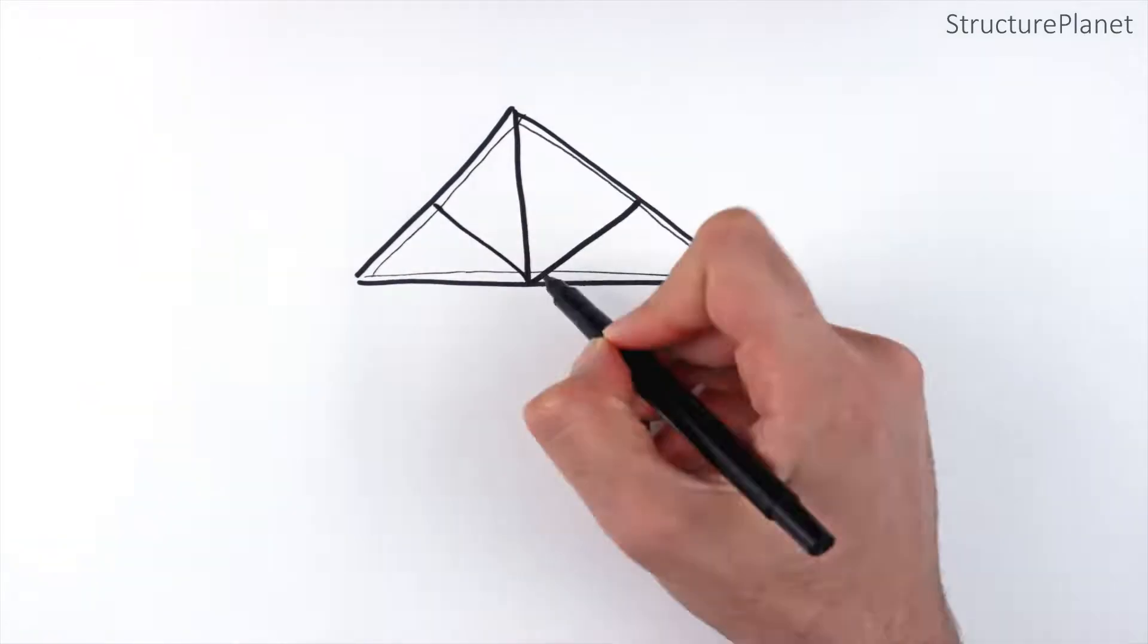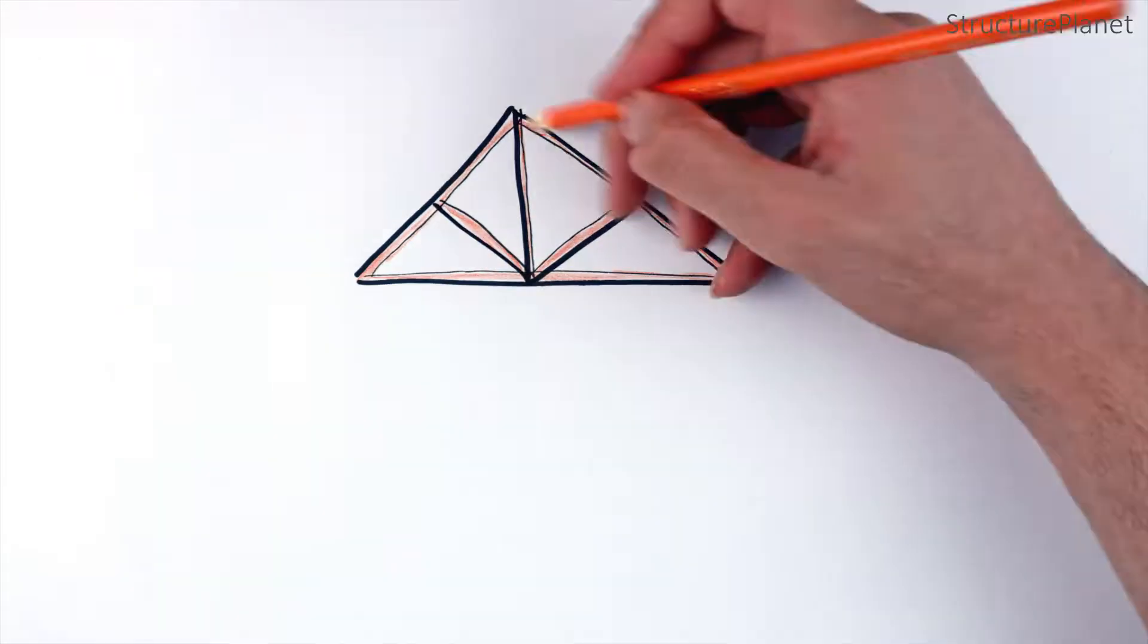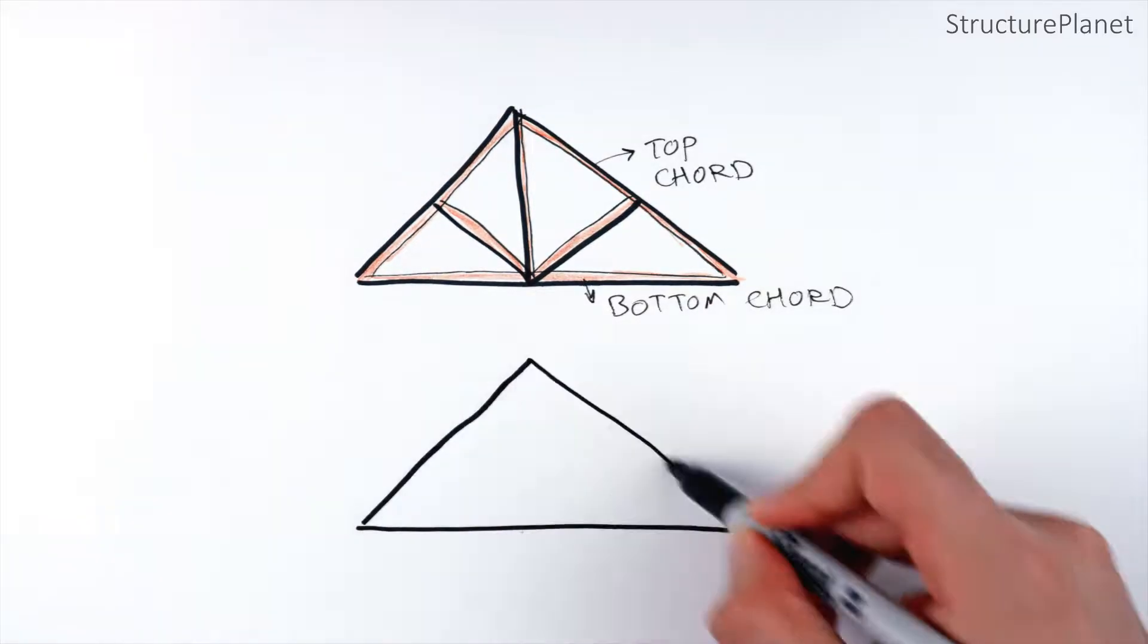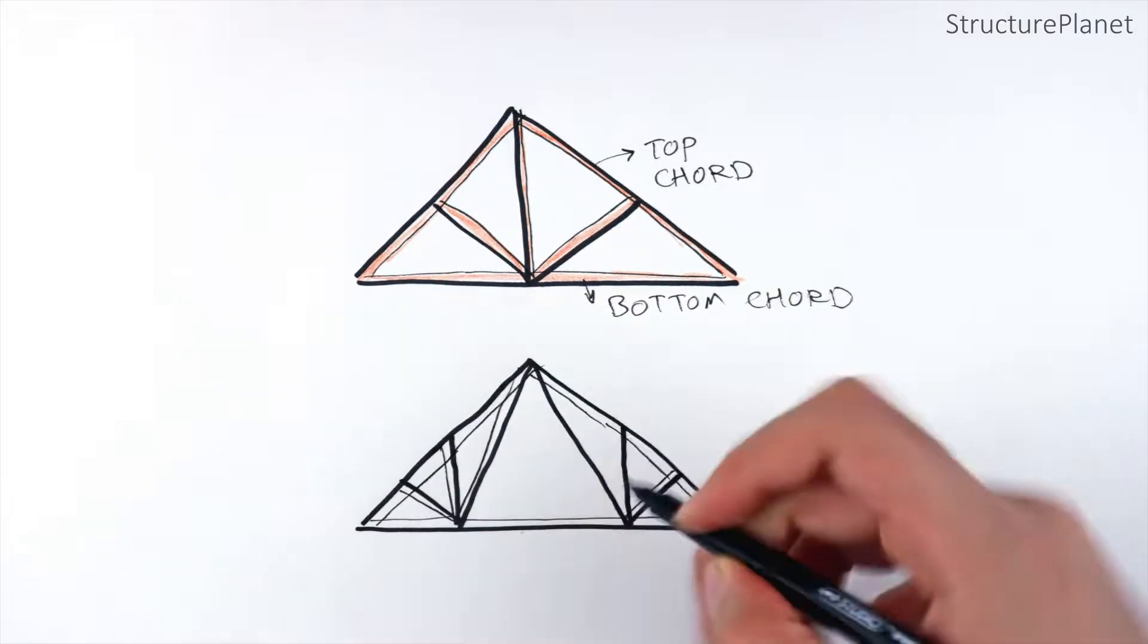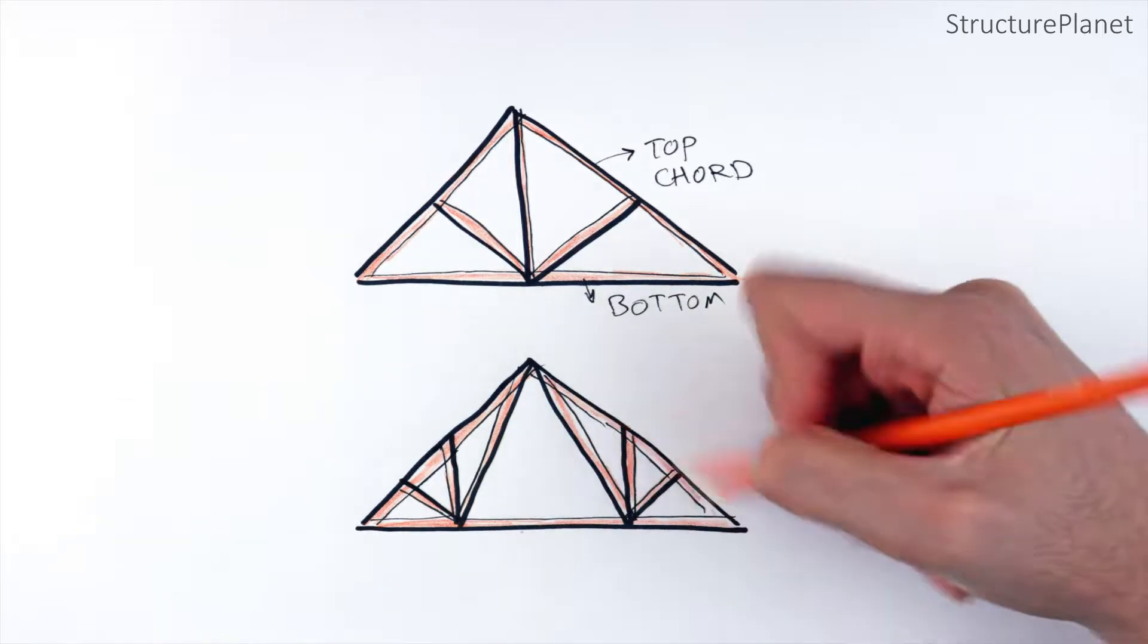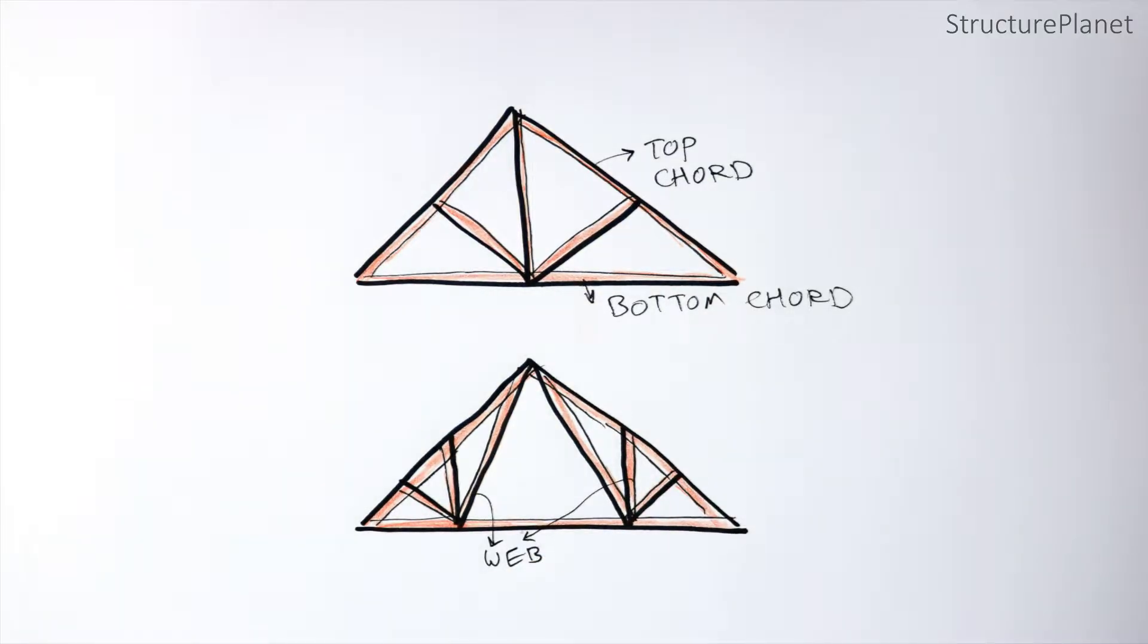Trusses are made of top and bottom chords that are connected by a series of vertical or diagonal members. Depending on how the chords are arranged, many different types of trusses can be made.